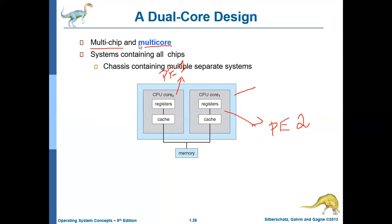The reason is, it is easier for the operating system to deal with multiple cores within a single chip rather than dealing with processes in different chips. That increases the work of the operating system. So multi-core systems perform better than multi-chip based multiprocessing systems.